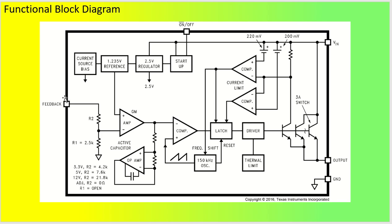Looking at the block diagram: for the fixed version, the internal feedback resistor values are built into the IC so you don't need to worry about them. For the adjustable version, R1 is open circuit and R2 becomes a short, allowing you to connect your own external feedback network separately.